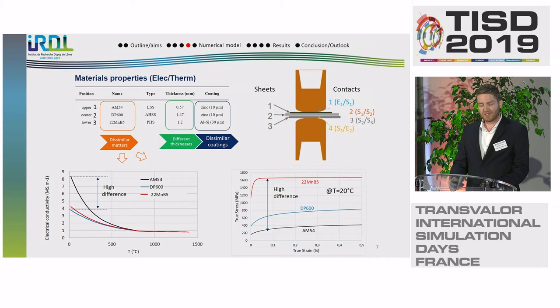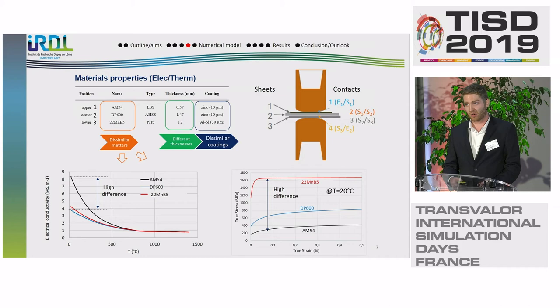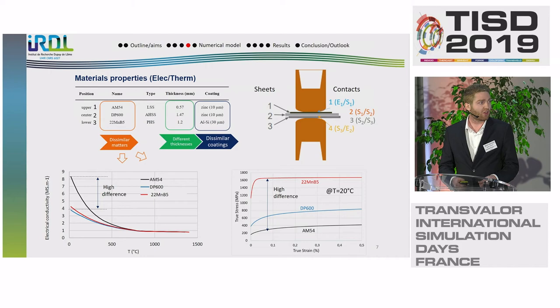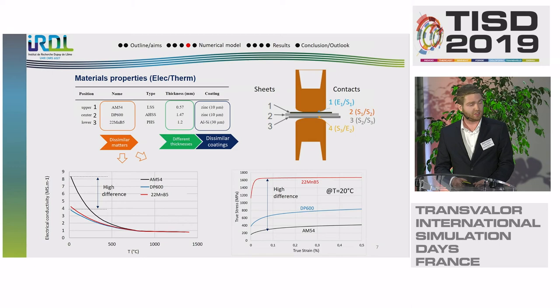The assembly is composed, as I said, of three sheets of dissimilar materials and thicknesses, and there is a big difference between their physical properties and mechanical behavior. For example, the electrical conductivity of the AM steel is two times higher than the electrical conductivity of the 22MnB5. For the mechanical behavior, the difference is even larger, with a ratio of 8 to 9 between the AM and the 22MnB5. The AM is the thin sheet, and the 22MnB5 is the thicker sheet. For the steels, a thermo-elasto-viscoplastic behavior is considered, and for the CuCrZr, it is a thermo-elasto-plastic behavior. The electrical, thermal, and elastic properties are thermo-dependent in the model.